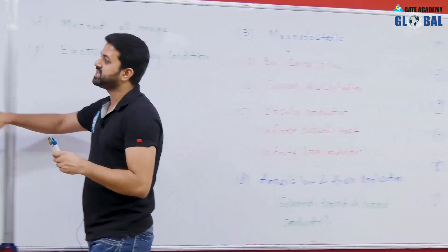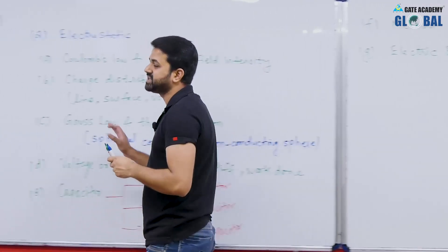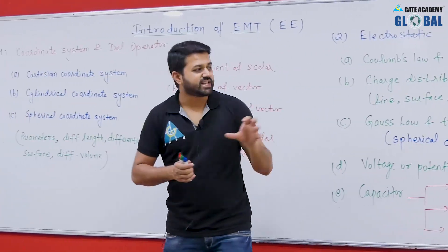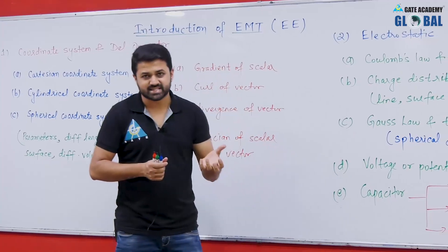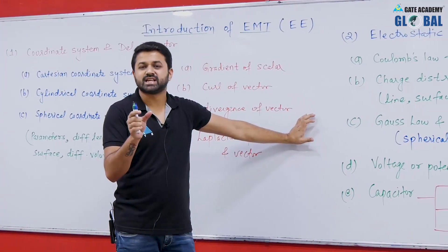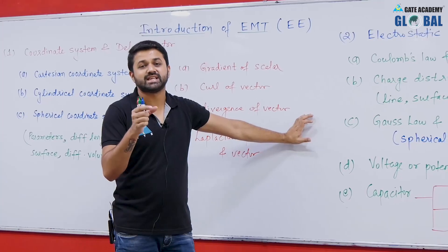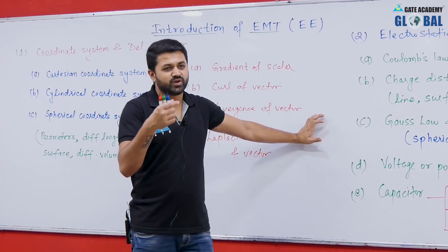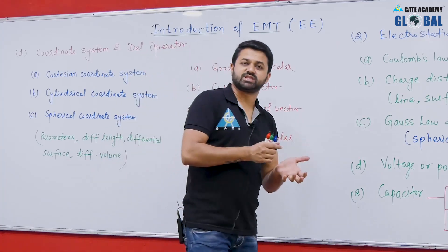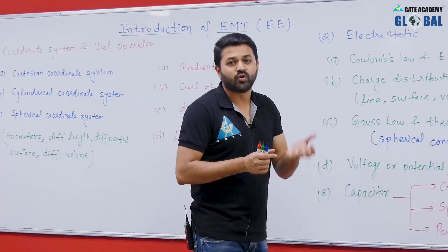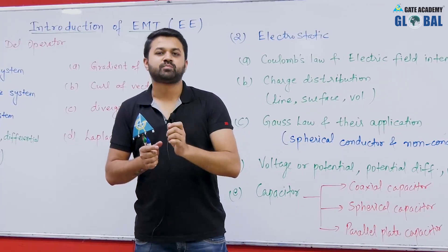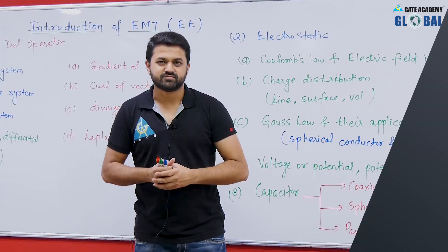These are all the topics of the Electromagnetics syllabus for electrical engineering students. The weightage of this subject is a bit less compared to other subjects, but the syllabus is short. You can easily cover it in 25 to 30 hours and get very good marks. If you want to achieve a rank under 10 or under 50 in GATE, then you have to prepare this subject. Thank you.